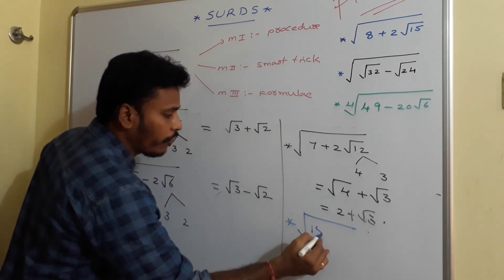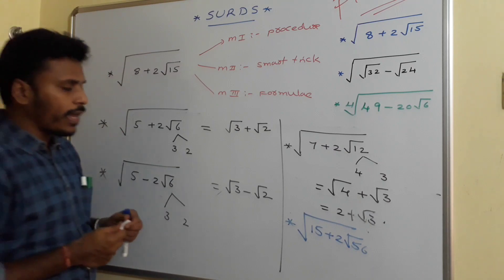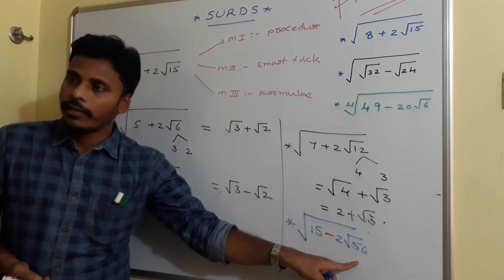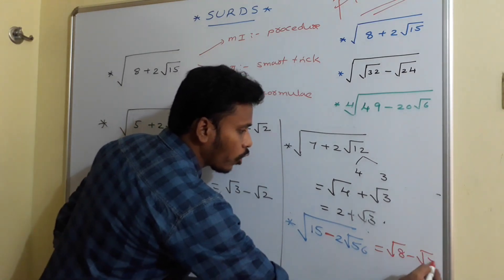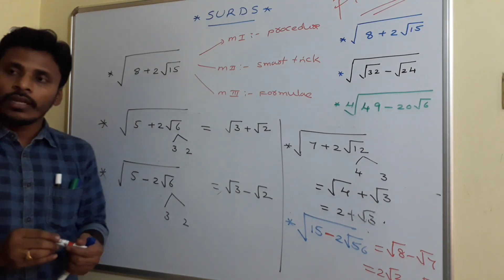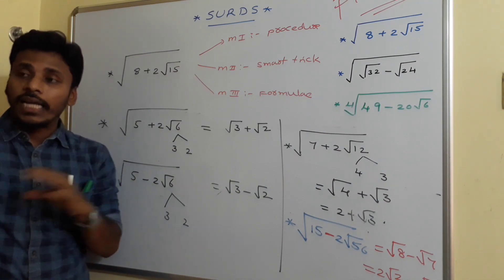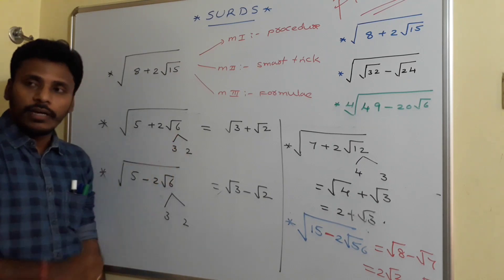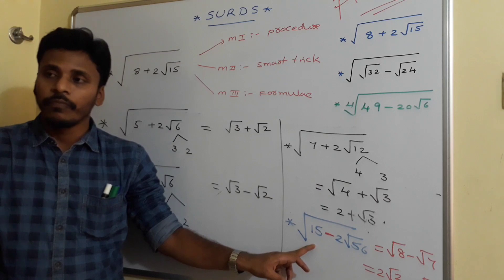For square root of 15 plus 2 root 56 or 15 minus 2 root 56: think about 7 and 8. Product of 7 and 8 is 56 and sum of 7 and 8 is 15. So the answer for square root of 15 minus 2 root 56 is root 8 minus root 7, which can also be written as 2 root 2 minus root 7. Always ensure there is a 2 before the irrational part for this direct method to work.